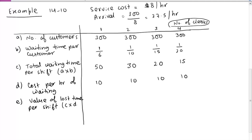Another characteristic of arrivals is the pattern. If someone collects data on how many people or items are arriving at a facility per hour and makes a histogram or bar chart, in most situations that data can be modeled using Poisson distribution. Poisson distribution is a very commonly used method for modeling the pattern of arrivals.